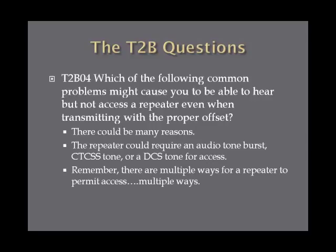Which of the following common problems might cause you to be able to hear but not access a repeater even when transmitting with the proper offset? There could be many reasons: your CTCSS tone could be off, there could be a DCS tone preventing access, or the repeater could require some sort of audio tone burst. Just remember, there are multiple ways for a repeater to permit access, and there's probably more than one correct answer on the exam.